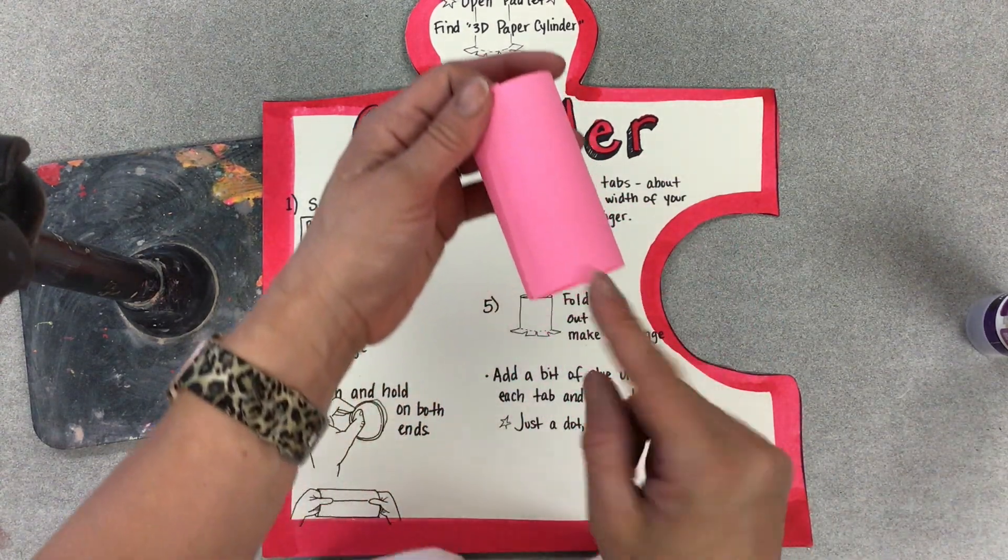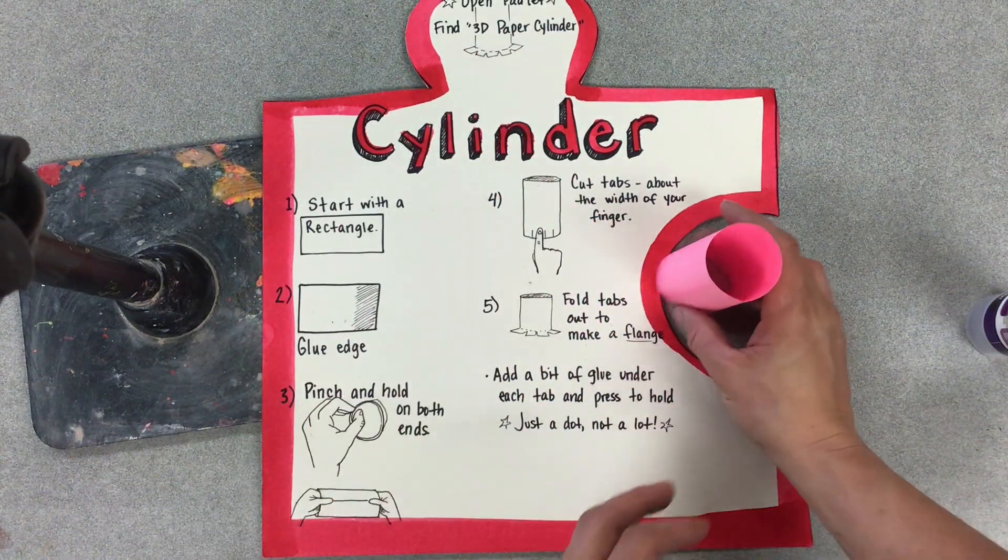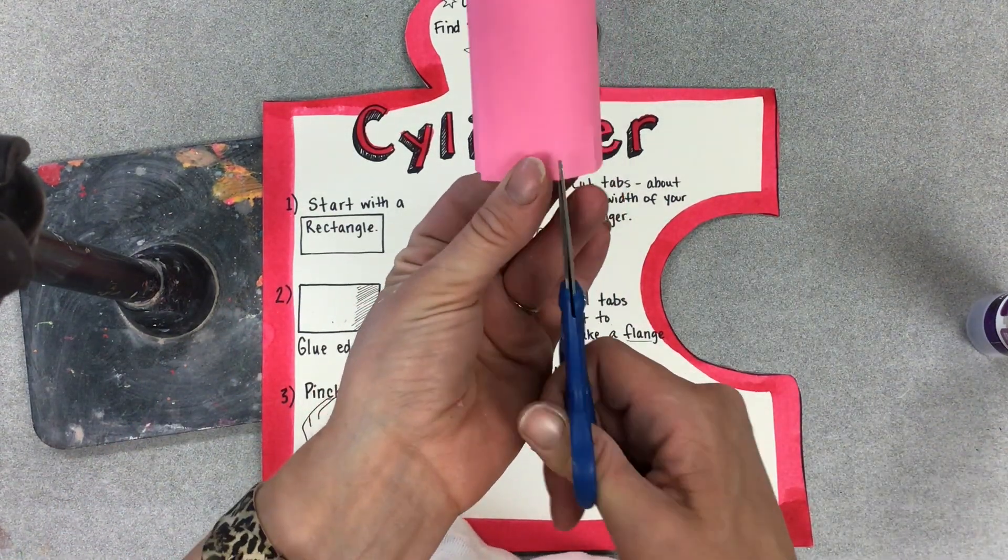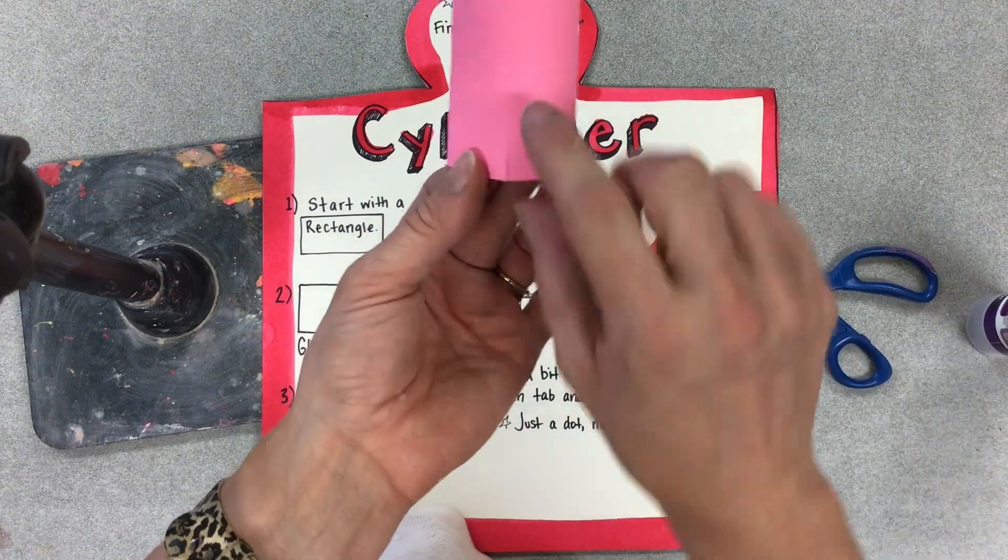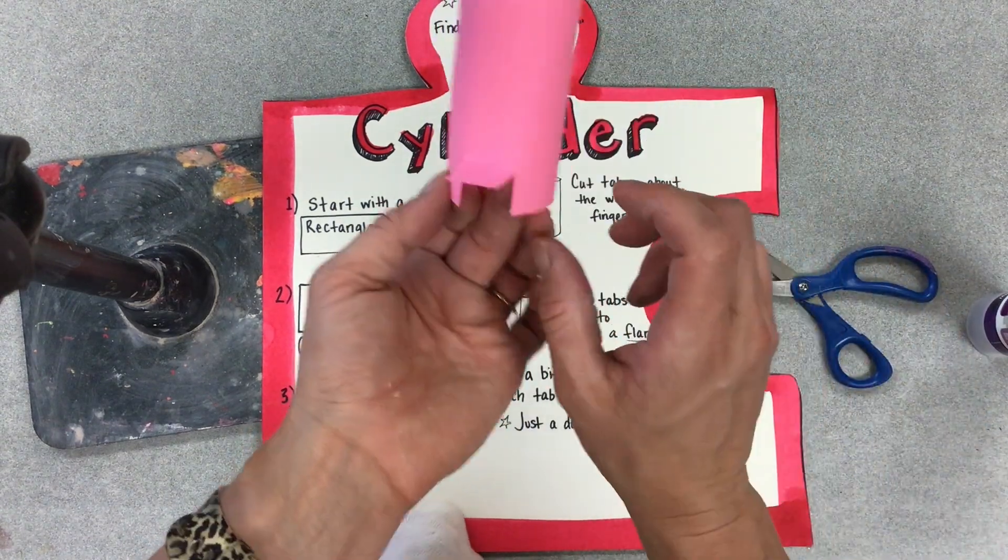Now you'll cut tabs along the bottom. Use your finger as a measurement and cut about a finger width up and a finger width wide all the way across, keeping them as even as you can.